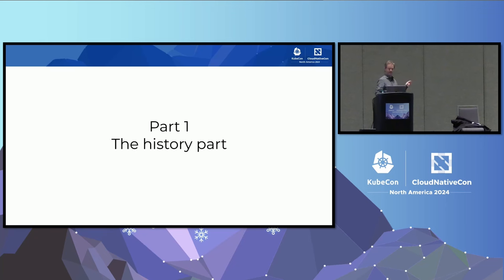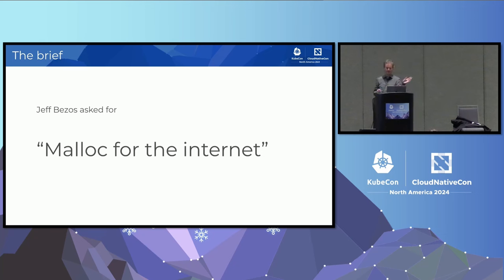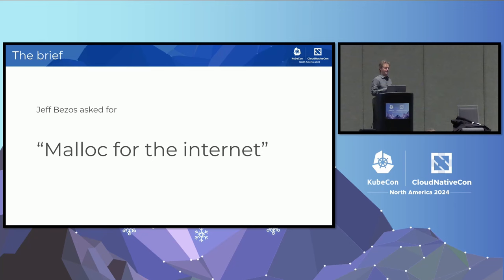Like most of my talks, I'm going to start with a bit of history — I like understanding things through the view of how we got here. The brief for Amazon S3 was "malloc for the internet" — that's what Jeff Bezos asked for. It's kind of weird but catchy. The idea was: you can allocate something and store it on the internet and it's there, and later maybe you can free it again. It's a really simple primitive that you can build other stuff on.